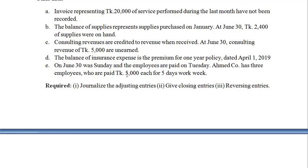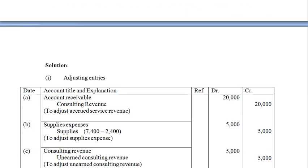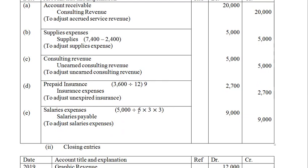The employee is paid $5,000 every week. So we will calculate the accrued salary for 3 days out of 5, giving $3,000. Salary expenses are to be adjusted. This is our adjusting entry.